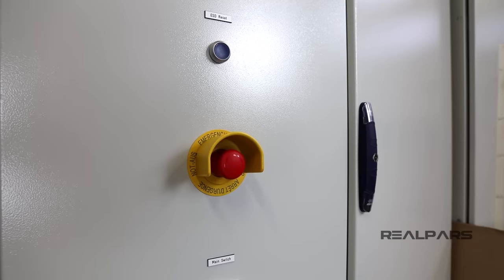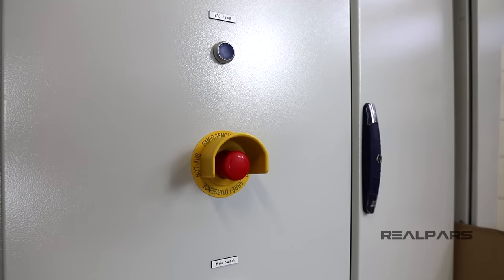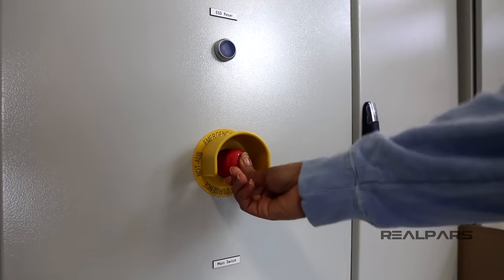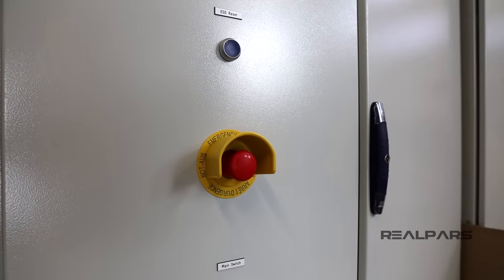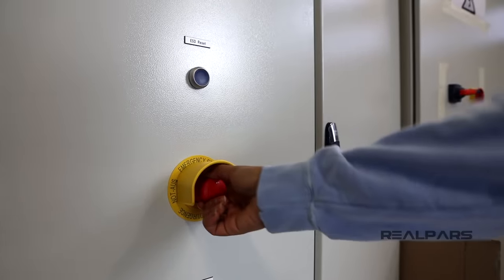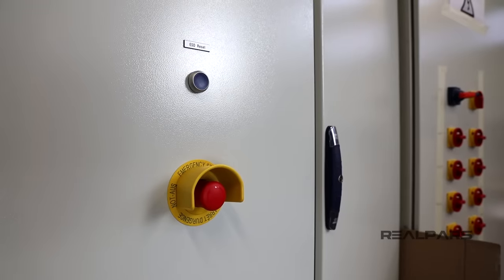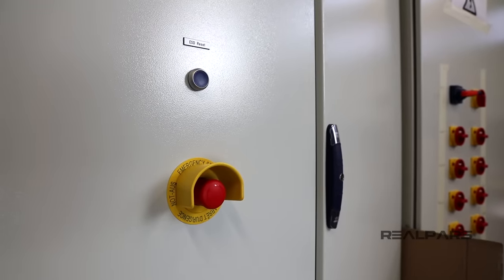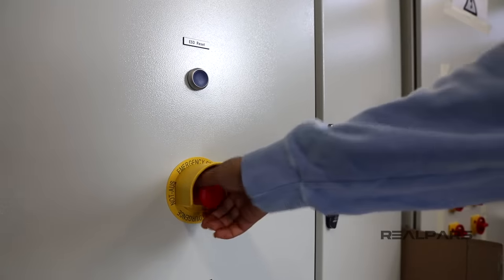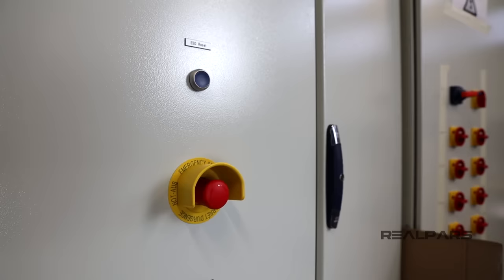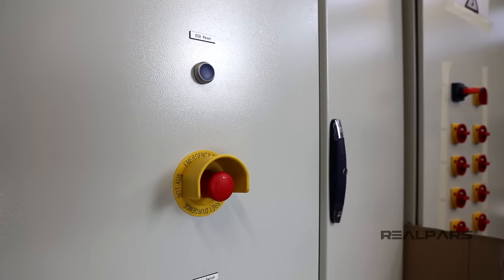The emergency stop that I have here goes to the lock mode when it's pressed. So I press the switch, and as you can see, the switch goes back to the lock mode. Now, to unlock the switch and turn it back to the normal mode again, I can twist it like this, and the switch will get back to the normal mode again.